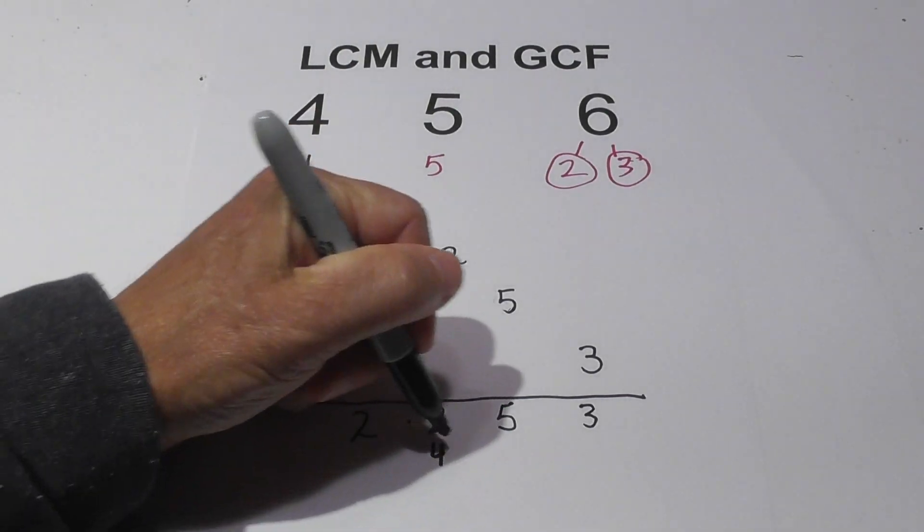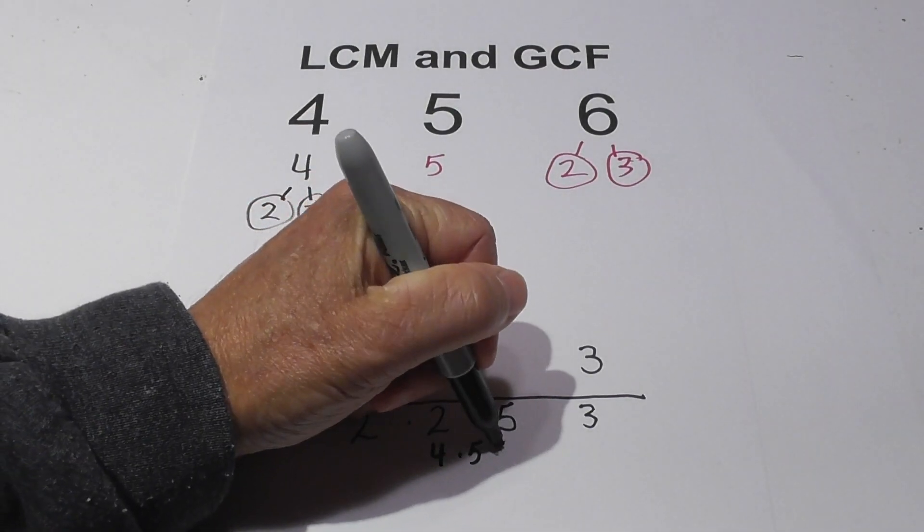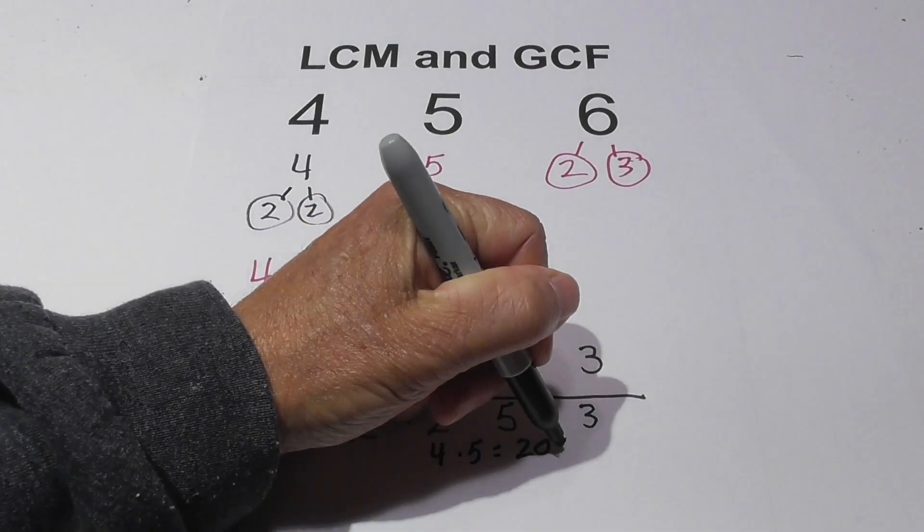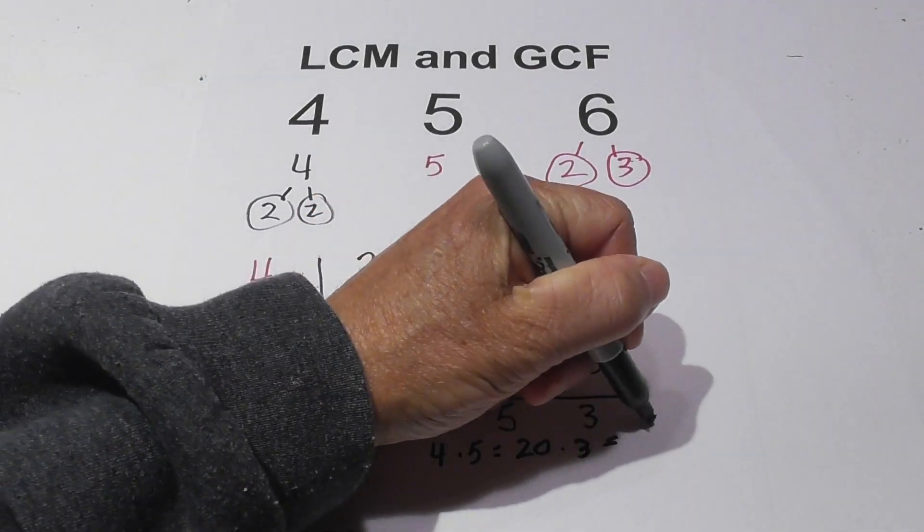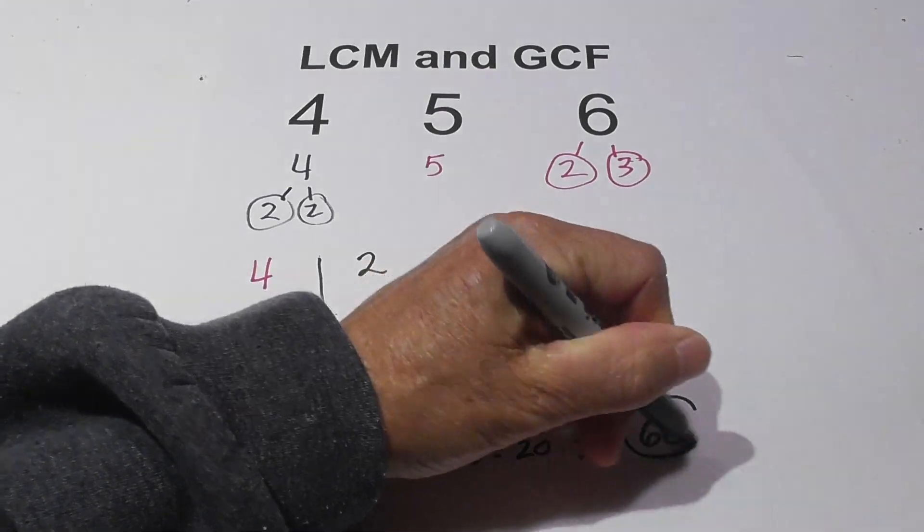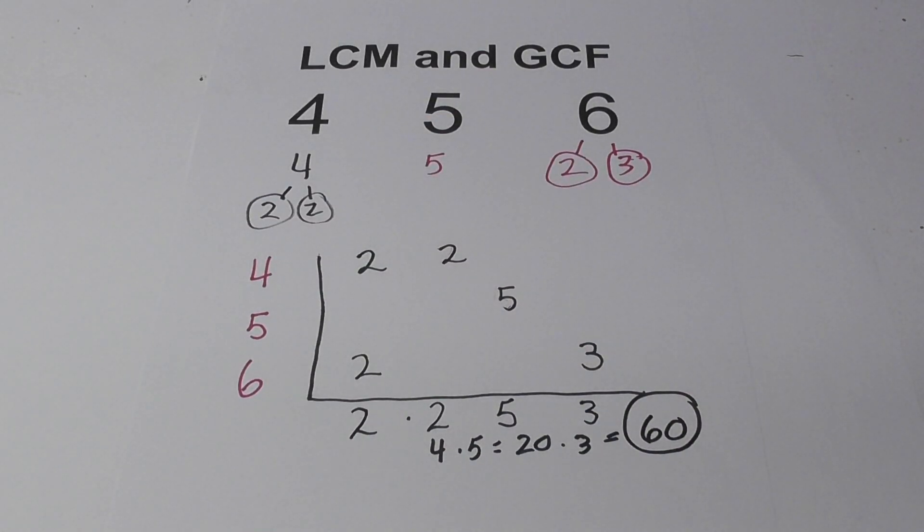So 2 times 2 is 4. 4 times 5 is 20, and 20 times 3 equals 60. So the LCM of 4, 5, and 6 is 60.